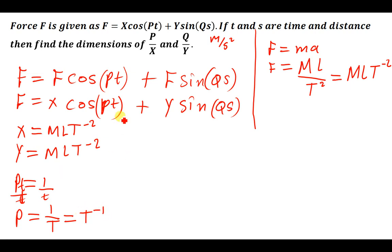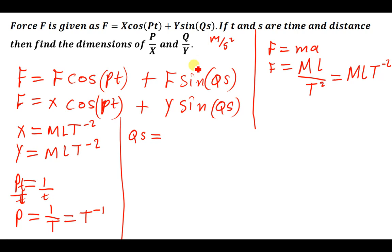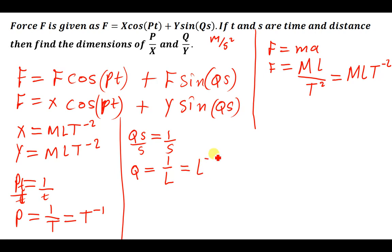The same applies to the dimensions for Q. We've been given that s is the distance, so qs equals 1 (dimensionless). Dividing both sides by s, Q equals 1 over s. Since s is a distance, that means 1 over L, which is L to the power negative 1. So the dimensions for Q are L⁻¹.